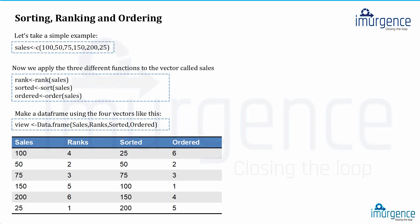To view all of these together, you can merge them into a data frame. Use `data.frame()` — note it must be lowercase `d`, not capital `D`, otherwise the function won't be found. Pass in the objects: `sales`, `rank`, `sorted`, and the ordered vector. Be very careful with capitalization — `sales` with a small 's' is different from `Sales` with a capital 'S', and using the wrong case will throw an 'object not found' error. The resulting table shows sales in unsorted form, the ranks assigned, the sorted sequence from smallest to largest, and the ordered indices.